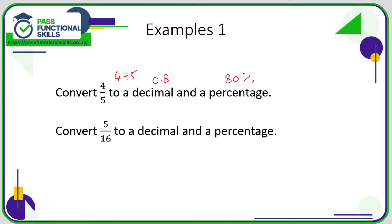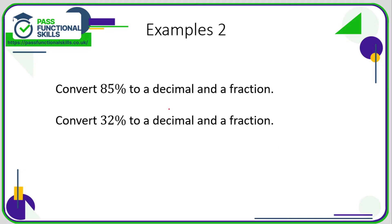Five sixteenths to a decimal. Well, that's going to be 5 divided by 16, and 5 divided by 16 comes to 0.3125. So to turn this into a percentage, just multiply by 100: 31.25 percent.